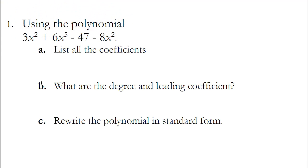Let's take a look at example 1. Using the polynomial 3x squared plus 6x to the 5th minus 47 minus 8x squared: part A says list all the coefficients, part B says what is the degree and the leading coefficient, and part C is rewrite the polynomial in standard form. I'm actually going to do this in a different order — I'm going to do part C first, and then we'll come back and do the other two parts.